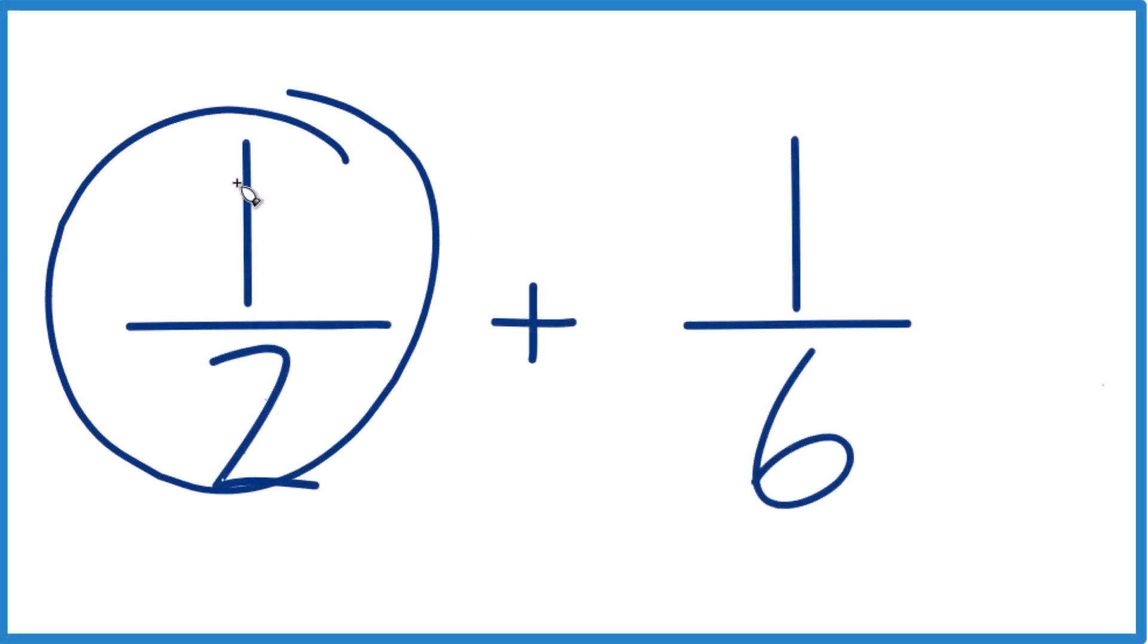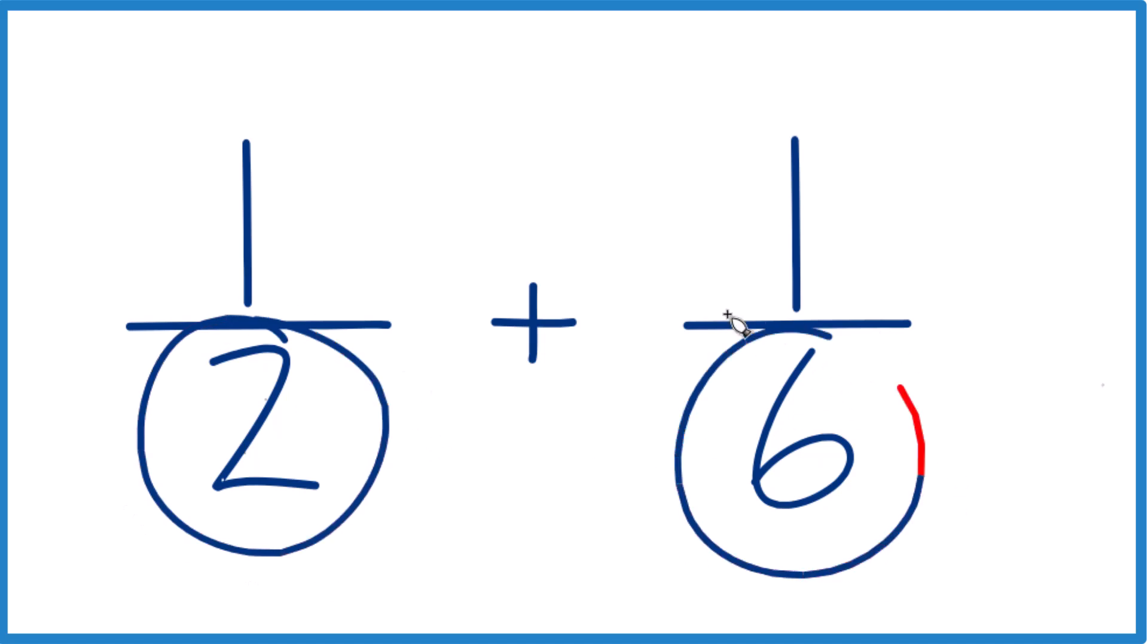So let's add 1 half, the fraction 1 half plus 1 sixth. Here's how you do it. So what we need, we need to get our denominators here, these are the denominators, to be the same. Because if these are the same, we'll just add the numerators together and we'll be done.